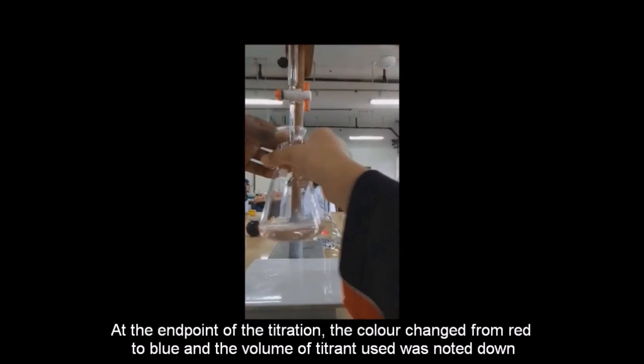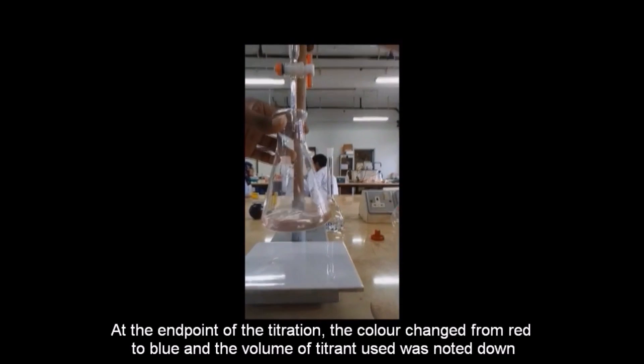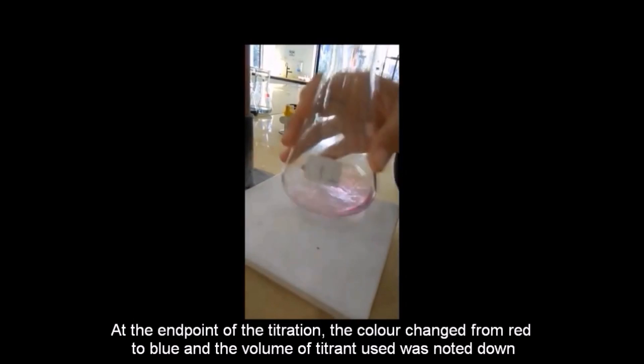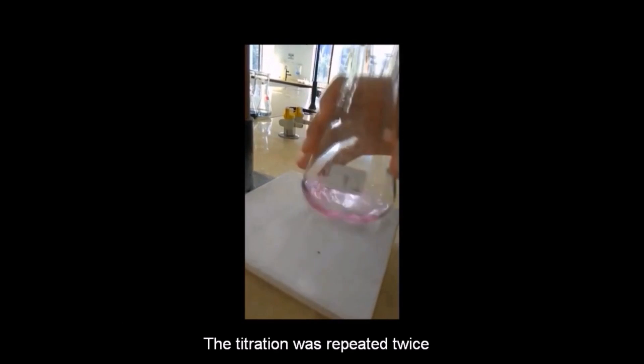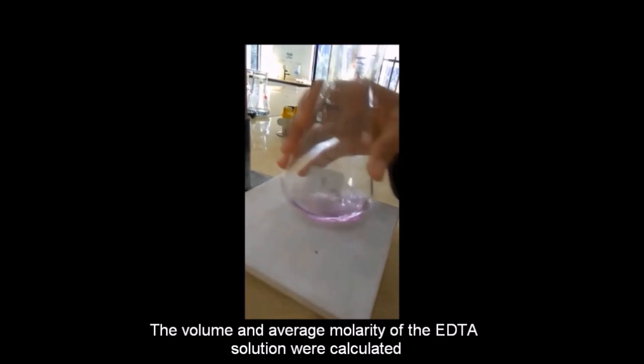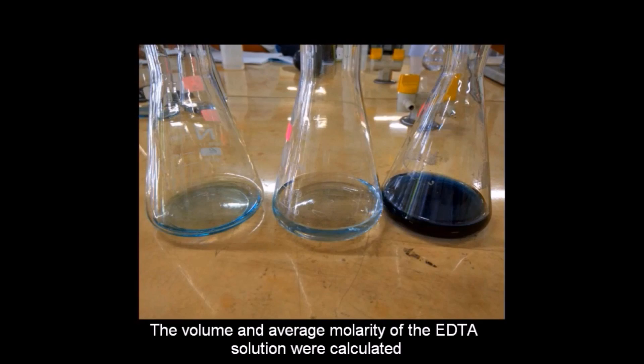At the endpoint of the titration, the color changed from red to blue and the volume of titrant used was noted down. The titration was repeated twice. The volume and the average molarity of the EDTA solution were calculated.